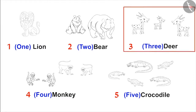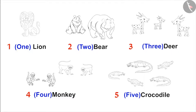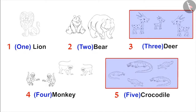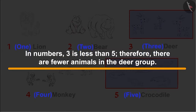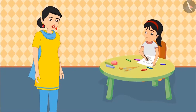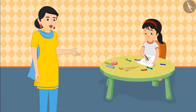Now tell me, are there fewer animals in the deer group or in the crocodile group? There are three animals in the deer group and five animals in the crocodile group. Amongst numbers, three is less than five. Therefore, there are fewer animals in the deer group. Very good, Pinky! Now quickly wash your hands and come.